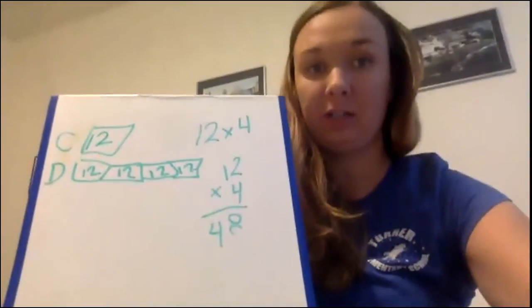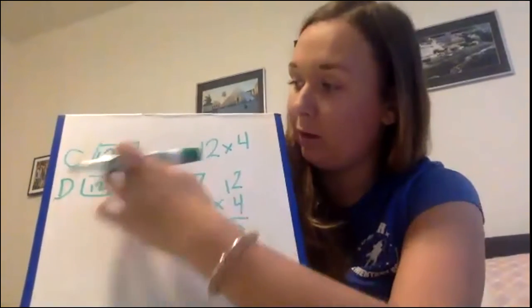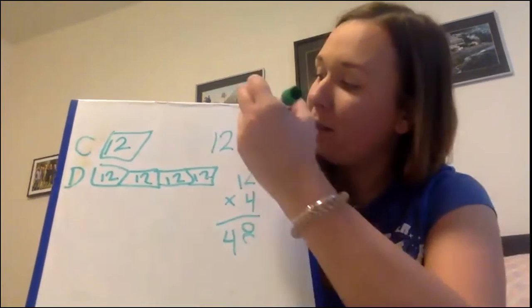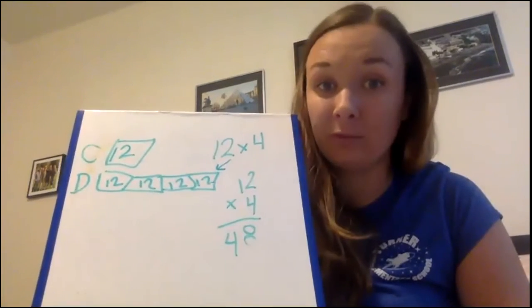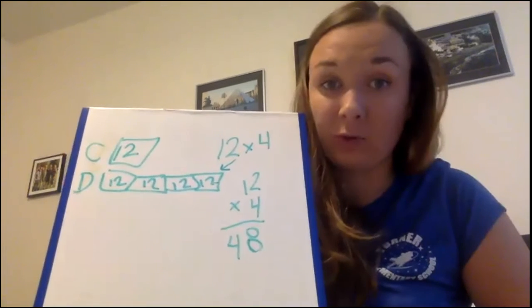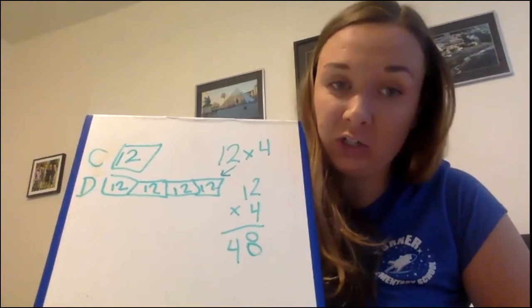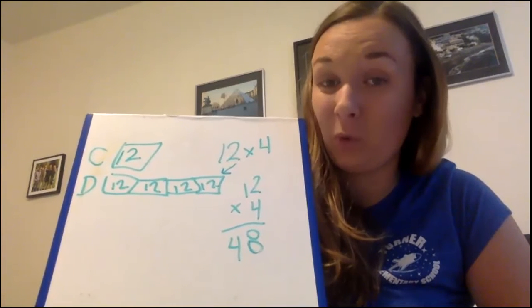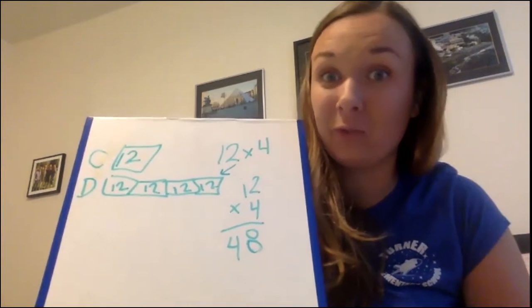All right. So the first one says a cat weighs 12 pounds and a dog weighs four times as much. How much does the dog weigh? Write an equation. So here I have drawn out a tape diagram to help me. The cat weighed 12 pounds and the dog weighed four times as much as the cat, so I made that same box four times. I saw that this dog box represents 12 times 4, and when I solved it I knew that 12 times 4 is 48. So the dog weighs 48 pounds.